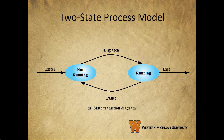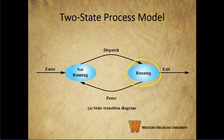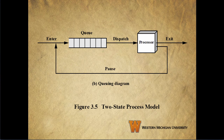The two-state process model shows a very simple way that processes can be dispatched and run. When a new process is spawned, it's put into the not running state. When it's time for that process to run, the dispatcher puts it into the running state. When it times out or has a need to wait, it's paused and put into the not running state again, and the next process is dispatched. When a process finishes or is halted, it exits. A simple implementation uses a queue — the dispatcher moves the next process in the queue to the processor to execute until it finishes or times out. If it finishes, it exits; otherwise it gets added back to the back of the queue.